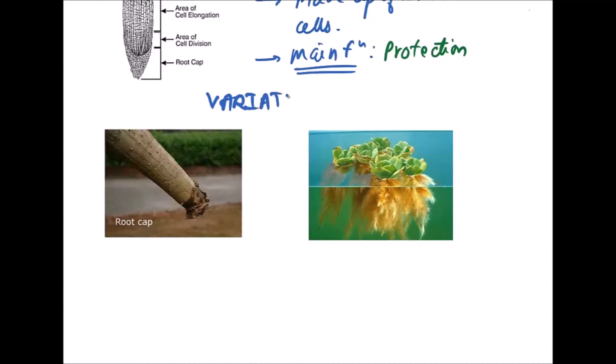Now what are these variations in root caps? First one is in Pandanus, which is also known as screw pine.